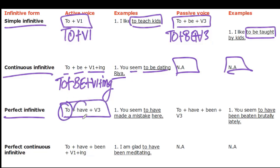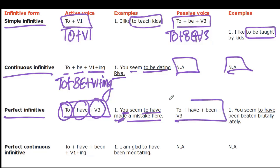The perfect infinitive in the active voice is formed with 'to + have + past participle.' For example: 'You seem to have made a mistake.' Here 'to have made' is the perfect infinitive in the active voice. In the passive voice the structure is 'to + have + been + past participle.' For example: 'You seem to have been beaten brutally,' or 'I am glad to have been selected by you.'